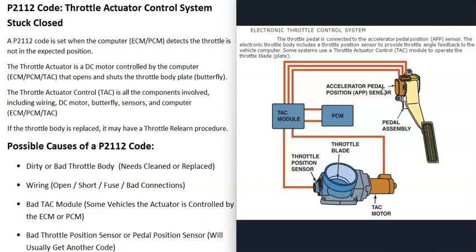Depending on the vehicle, the year, make, and model, there can be different types of systems, so it's always a good idea to get a diagram of your particular vehicle. Basically, how these systems work is there's a sensor down on the gas pedal detecting how much that pedal has been pressed, and it reports this information back to a computer called the throttle actuator control module. Sometimes this module can be built into the main engine control module or powertrain control module, or it could be separate. This computer controls a small DC motor built into the throttle body called the throttle actuator motor, which opens and shuts that plate. There's also a throttle position sensor reporting back to the computer how open that plate is.